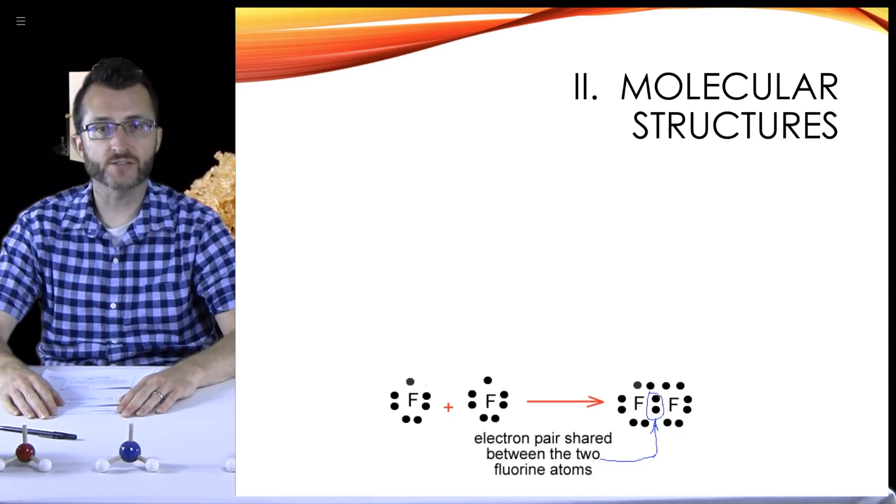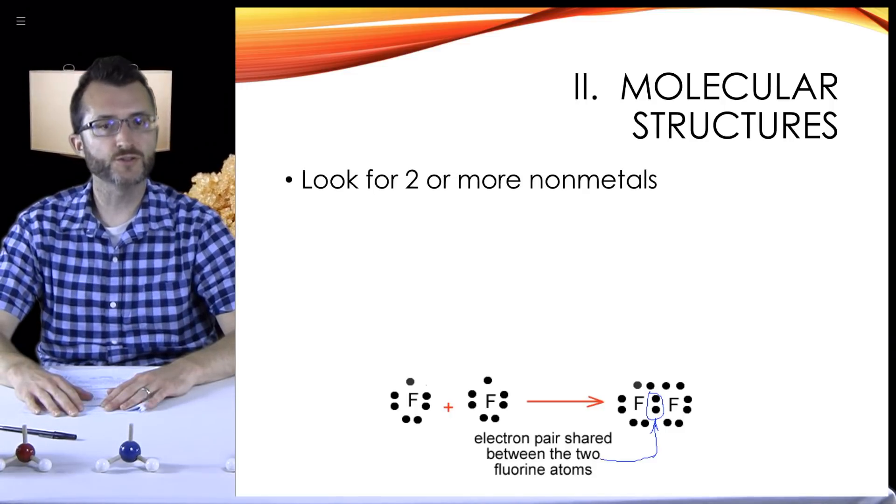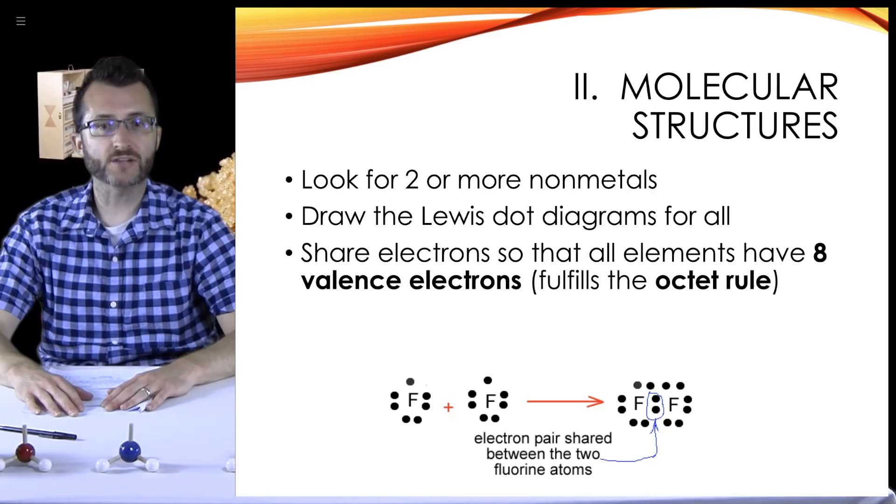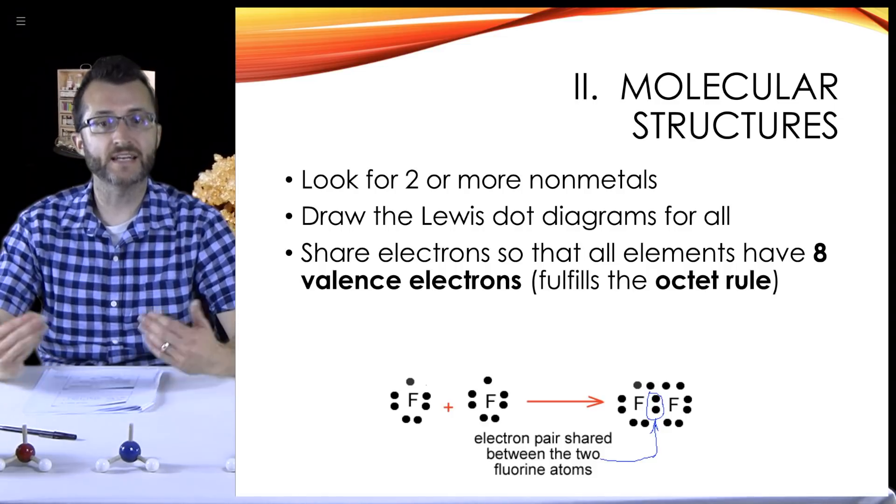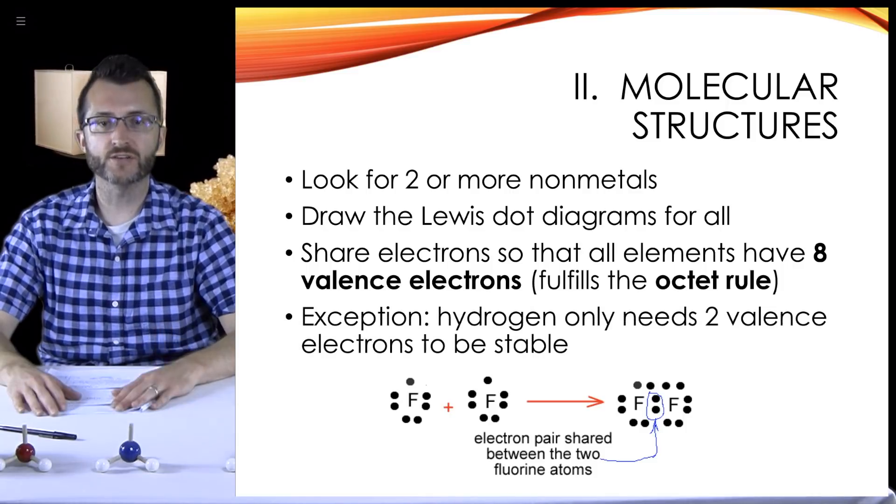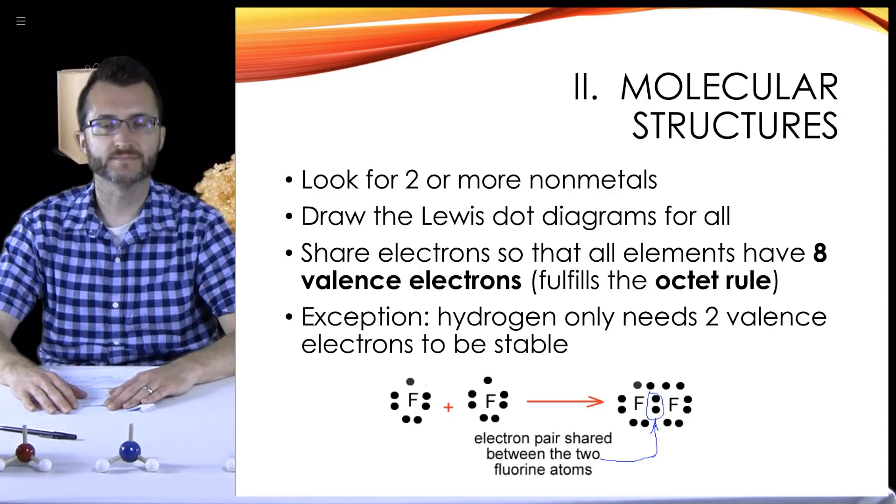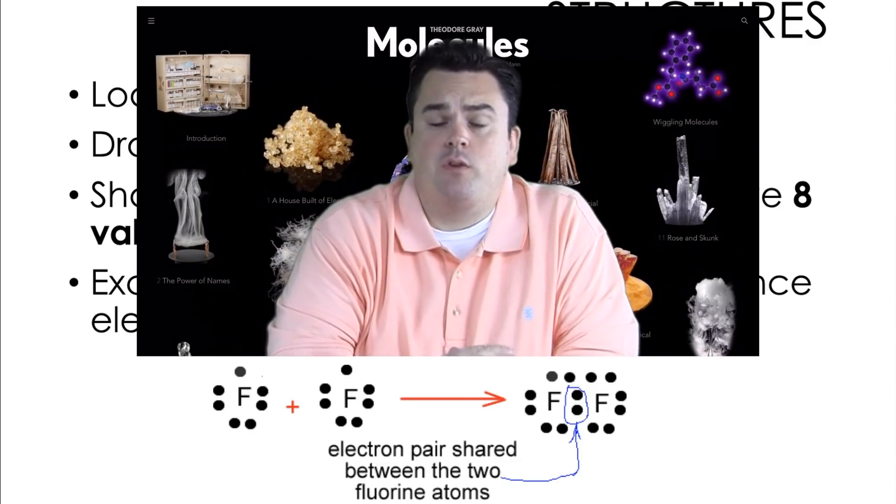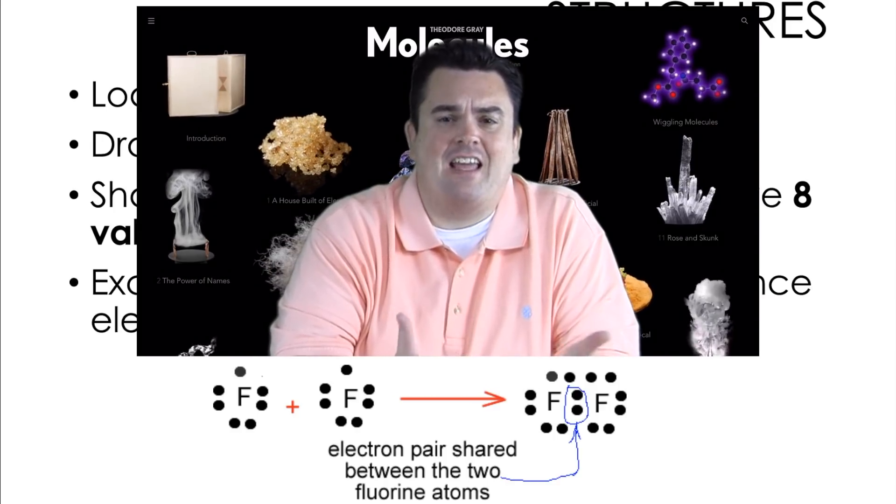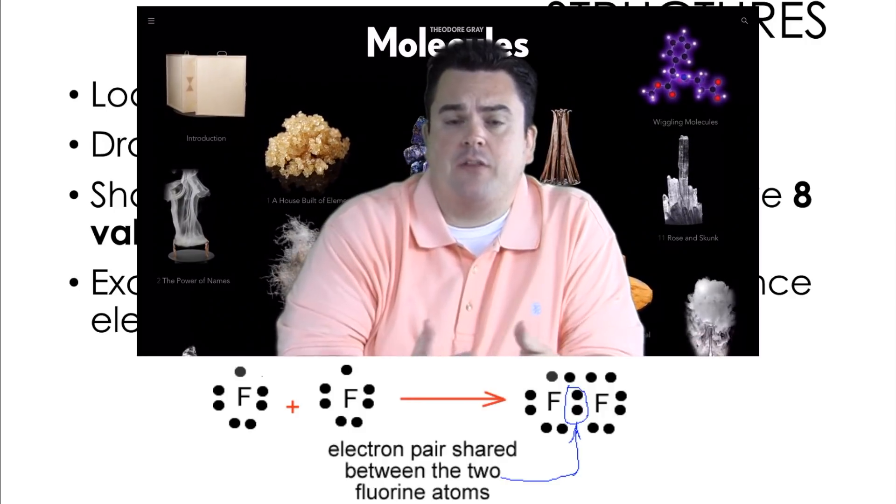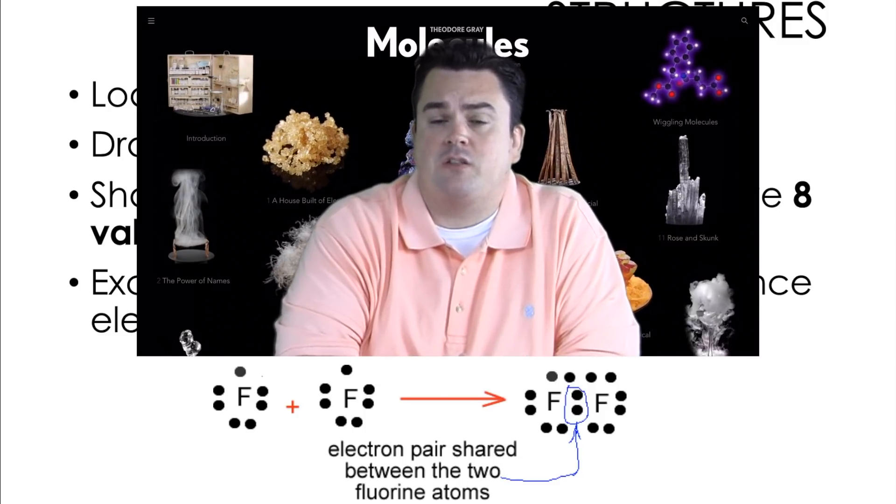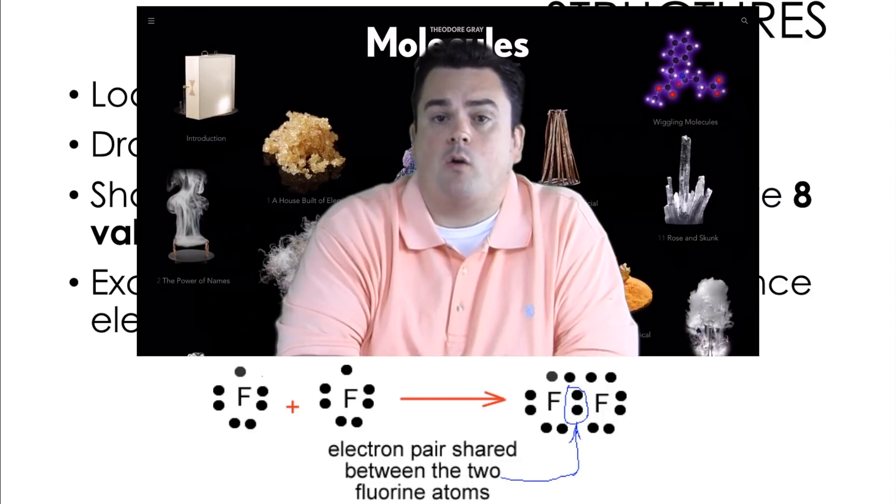Continuing on with molecular structures, which remember have covalent bonds. Look for two or more non-metals. Draw the Lewis dot diagrams for all. Share electrons so that all elements have eight valence electrons. We say that it fulfills the octet rule where everything has eight valence electrons. Exception: hydrogen only needs two valence electrons to be stable. Taking a look at the diagram below, we see we have two fluorine atoms on the left where they both have seven valence electrons. They're both kind of missing one to get that eight, that octet rule. If you take a look at how they come together to form F₂ bonded, they have those two electrons in the middle between them that were originally those single valence electrons, those unpaired electrons. That has now become our covalent bond.